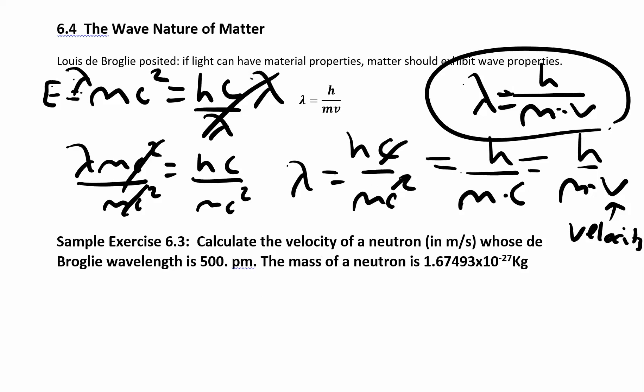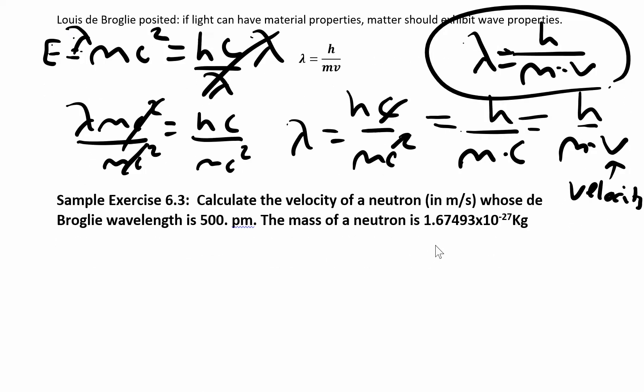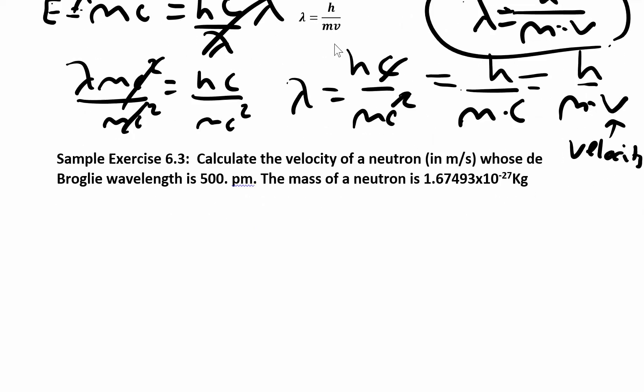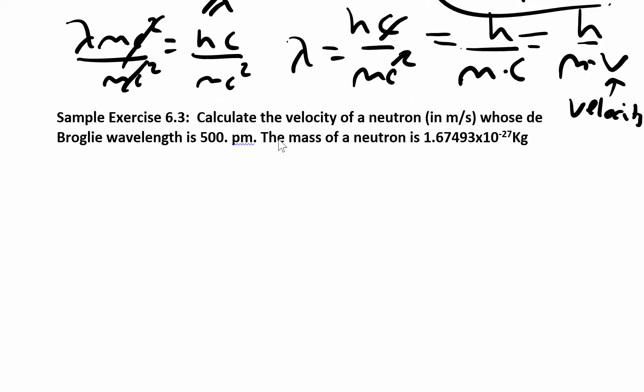So when is this really important? When you're looking at electrons. Electrons are really tiny. They don't weigh a lot. Sometimes it's easier to describe them as having particle properties, and sometimes it's better to describe them as having wavelength properties. It depends on what quantity you're looking at. All matter does behave like a particle and a wave, and you should be able to calculate the wavelength for any particle that's traveling.